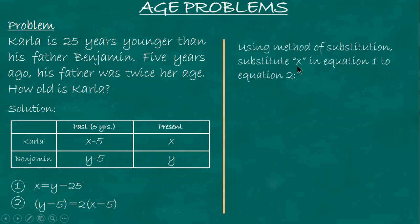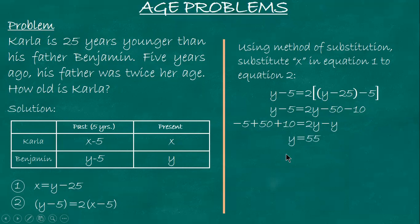The easiest is substitution. Using the method of substitution, substitute x from equation 1 into equation 2. So you put x equals y minus 25 into the second equation. This gives you: y minus 5 equals 2(y - 25) - 5. Then you simplify: y minus 5 equals 2y minus 50 minus 10.